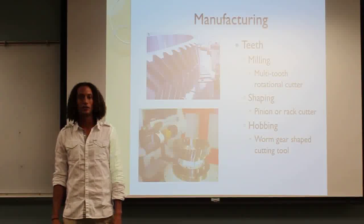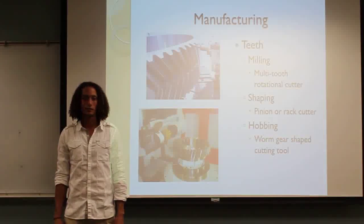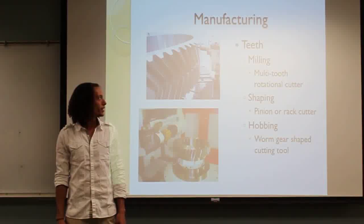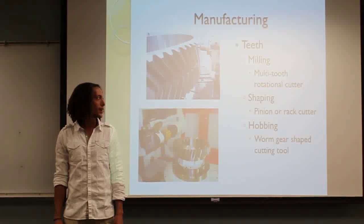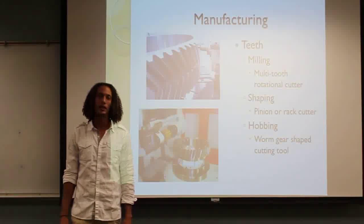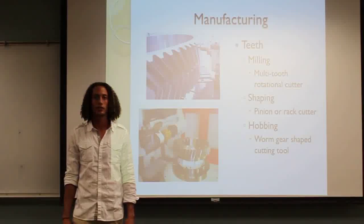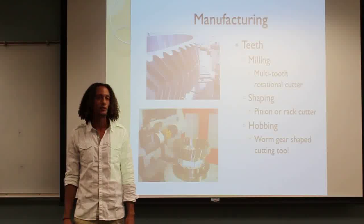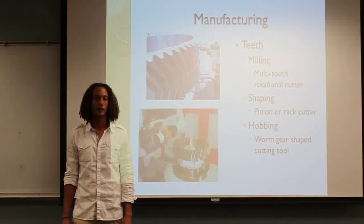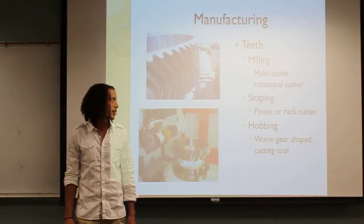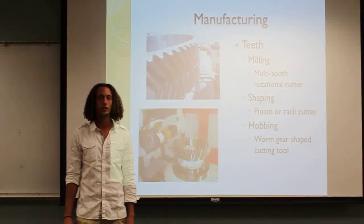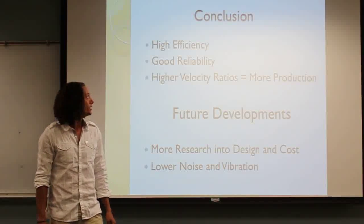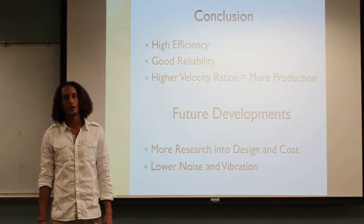In manufacturing the teeth, there are three basic methods: milling, shaping, and hobbing. Milling uses a rotational cutter. Shaping uses a pinion and rack cutter. And hobbing uses a cutter shaped more like that of a worm gear.